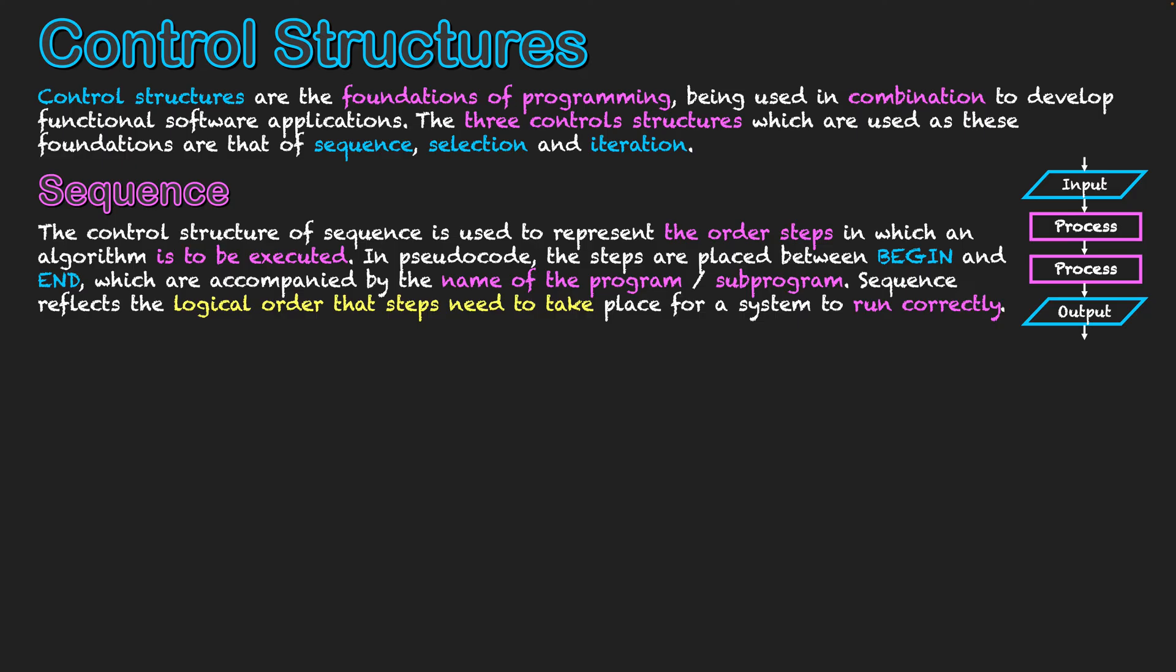And you kind of see that in my image here. That's obviously a snippet from a flowchart, but we've got to get the inputs from the user, we then do one process to that input data, we might do another process to that input data, and then we display an output.